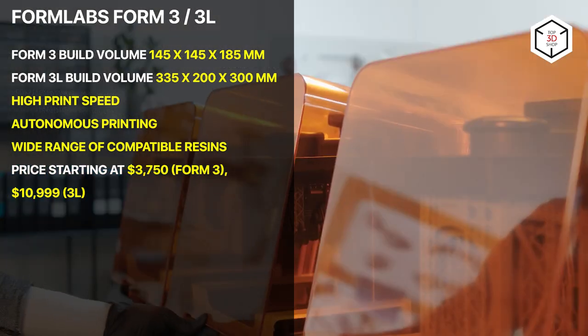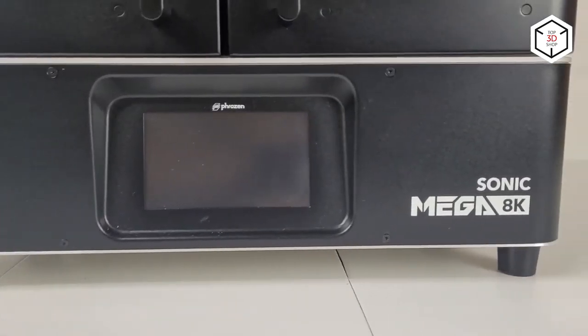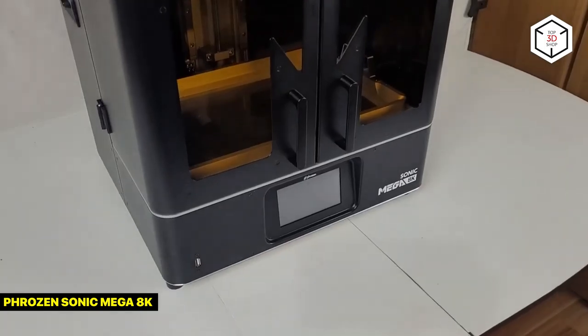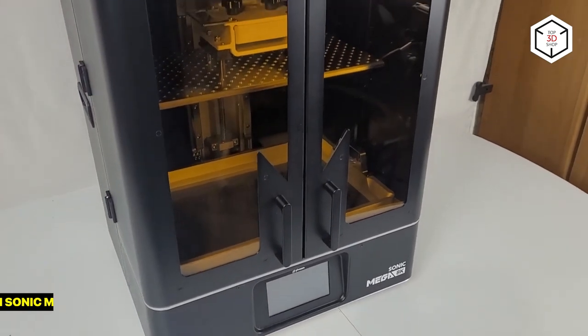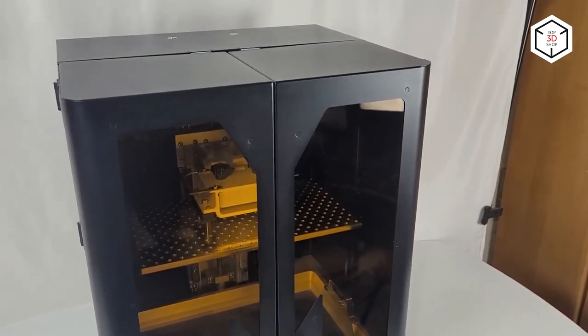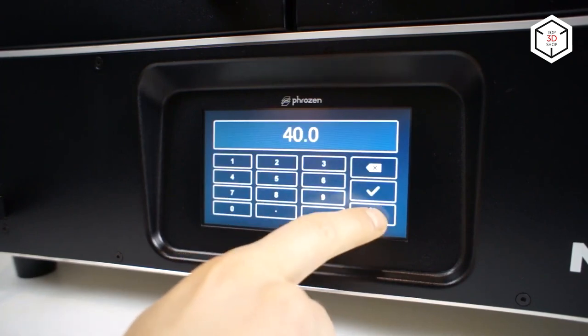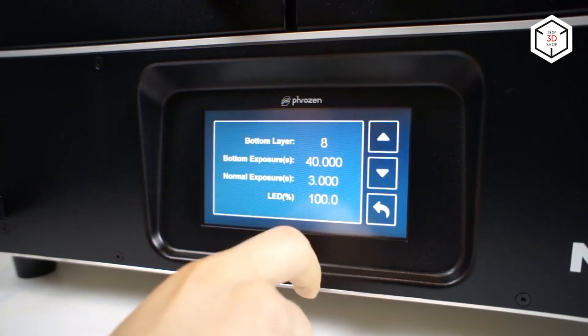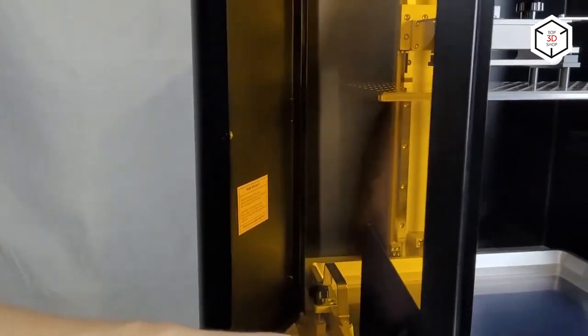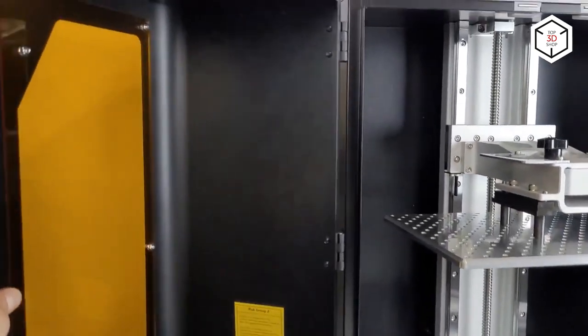Our next printer is the Phrozen Sonic Mega 8K, which stands out among other large resin 3D printers as it provides both stunning print quality with unprecedented resolution and one of the largest print volumes on the market: 330 by 185 by 400 millimeters. Its 15-inch 8K mono LCD panel allows you to print at 43 micron resolution, which gives you almost twice more detailed prints as most competitors can offer.